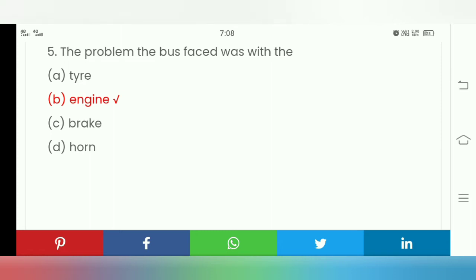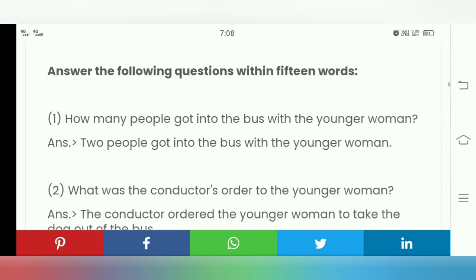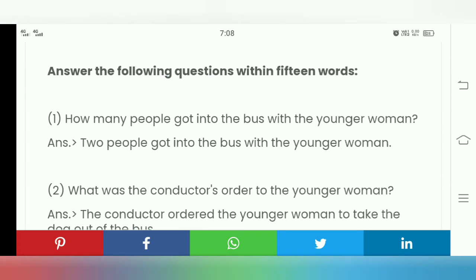Next, Exercise 2: Answer the following questions. How many people got into the bus with the younger woman? Answer: Two people got into the bus with the younger woman.